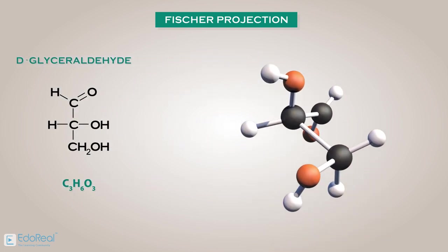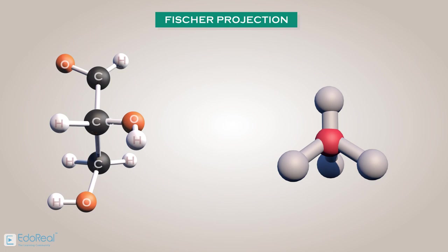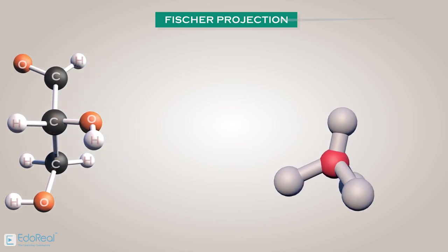Its three-dimensional representation is shown. The first step is to rotate the molecule in such a way that the first carbon should be at the top, and second carbon in the middle, and the third carbon at the bottom. Or simply, it can also be shown like this, which looks like a tetrahedral.